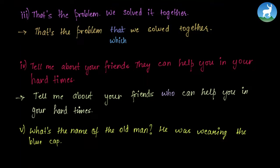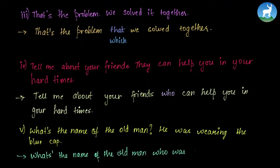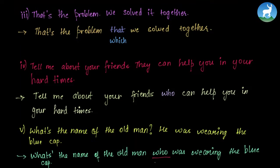'What's the name of the old man? He was wearing the blue cap.' Joined: 'What's the name of the old man who was wearing the blue cap?' We're talking about the old man and referring to a person, so we use who. The subject of the sentence is the old man and the action is wearing the blue cap. The main focus is finding the name of the old man, hence we use who.